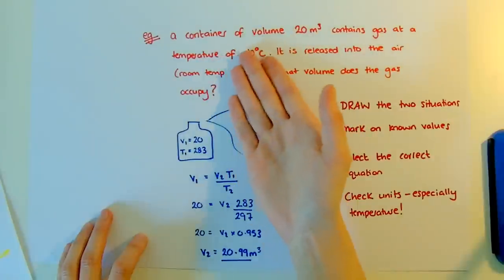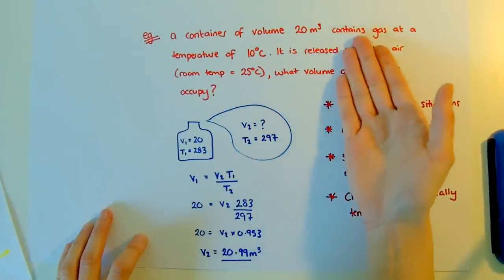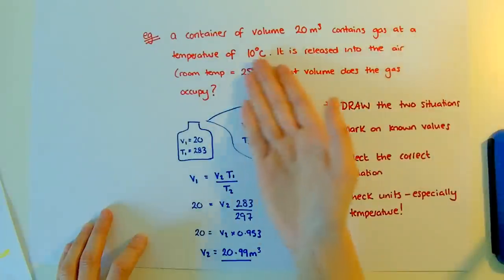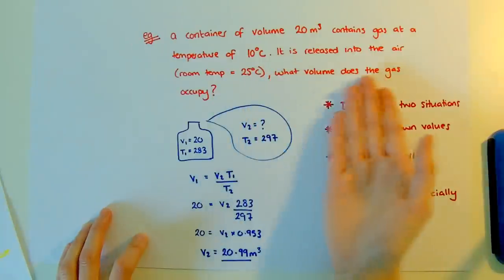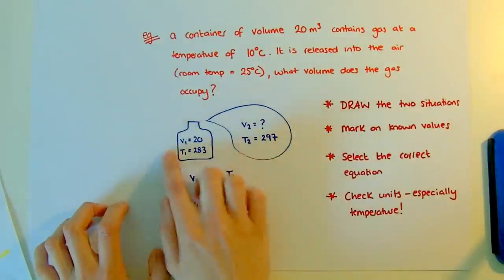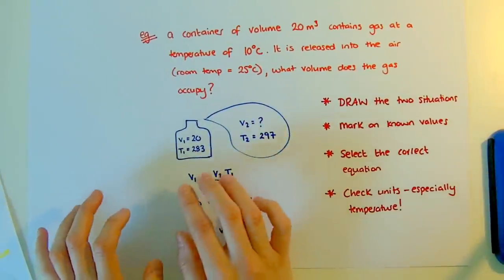So for example, a container of volume 20 metres cubed contains a gas at temperature 10 degrees C. It is released into the air at room temperature. What volume does it have? I always start by drawing the two situations—not some kind of artistic drawing, just a very simple one.